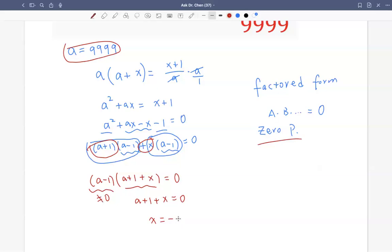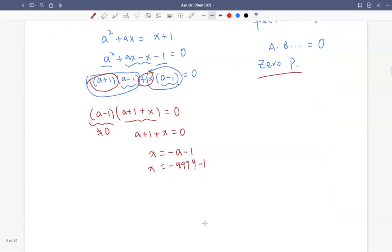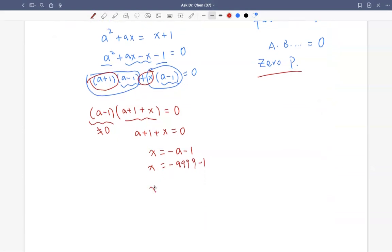So we move a to the right-hand side, move 1 to the right-hand side. Well, what is a? a is 9,999 minus 1. So that's negative 9,999 plus 1, which means x equals negative 10,000.